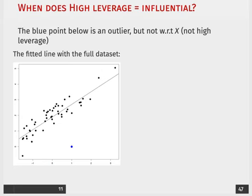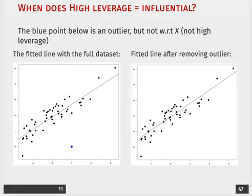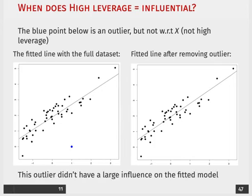This is what the fitted line would look like with the full dataset, and this is what it would look like after removing the outlier. You can see that this outlier did not have a large influence on the fitted model.